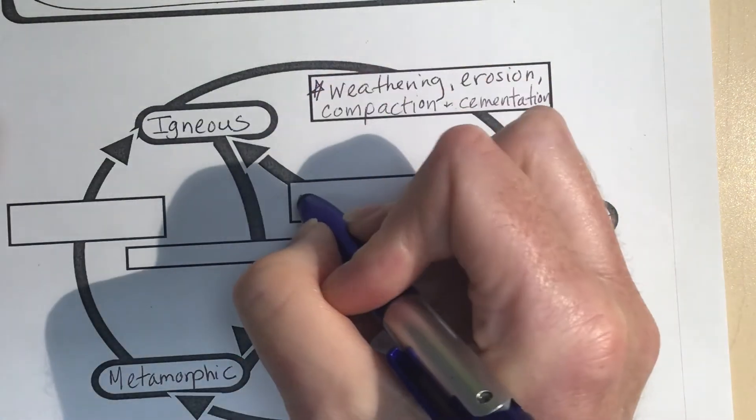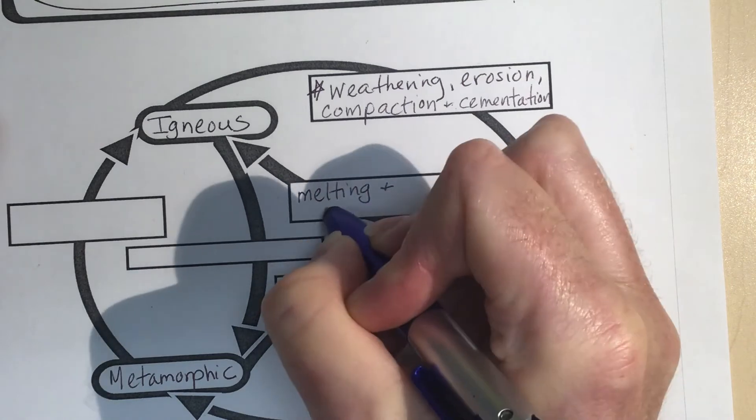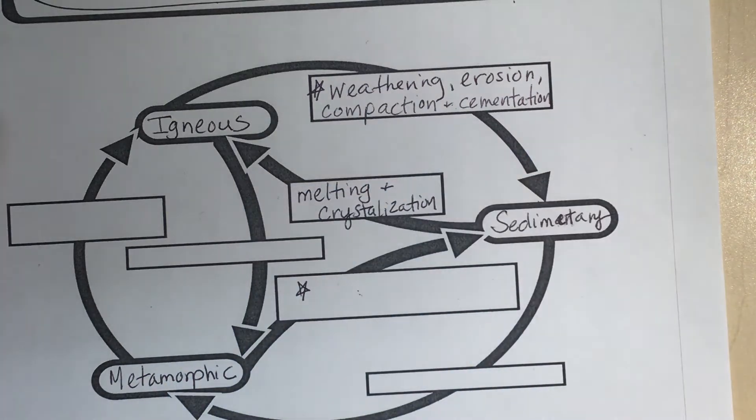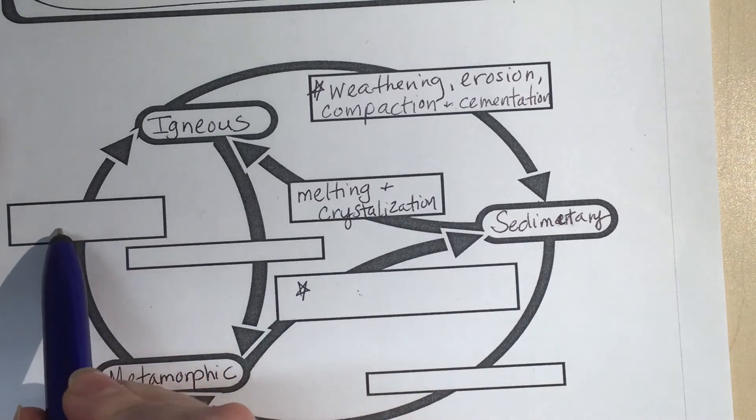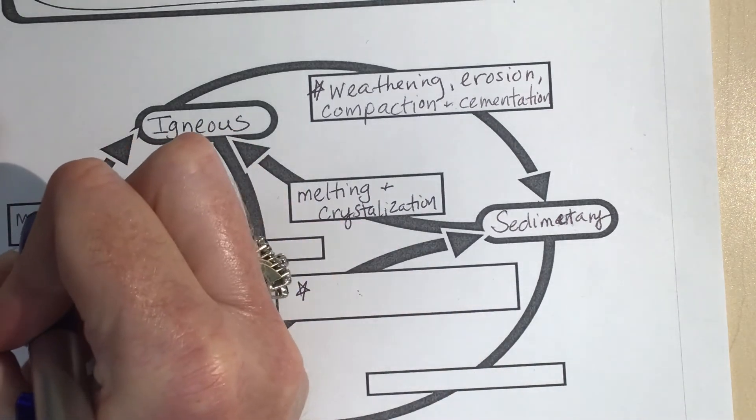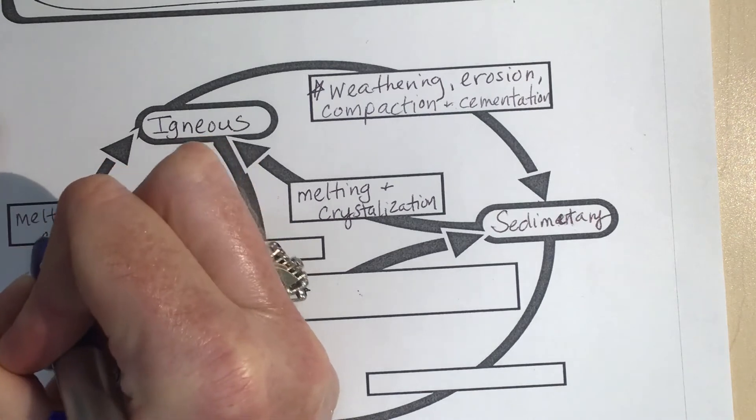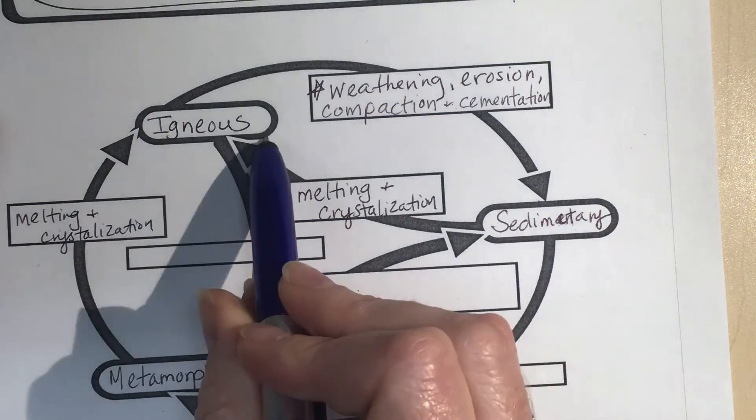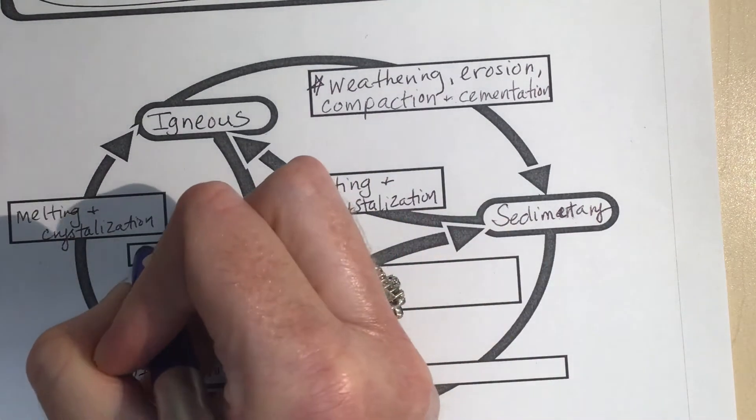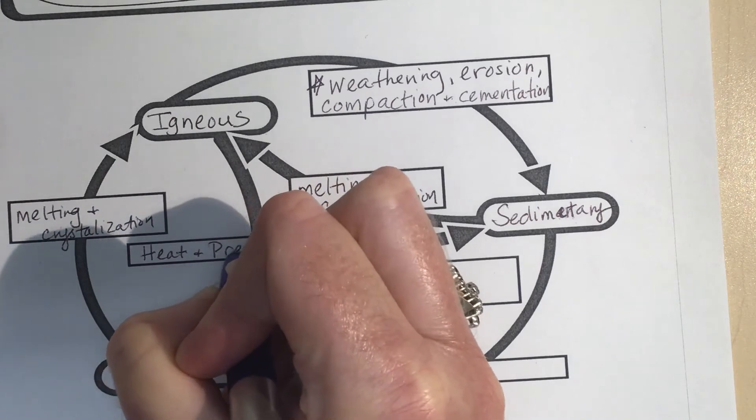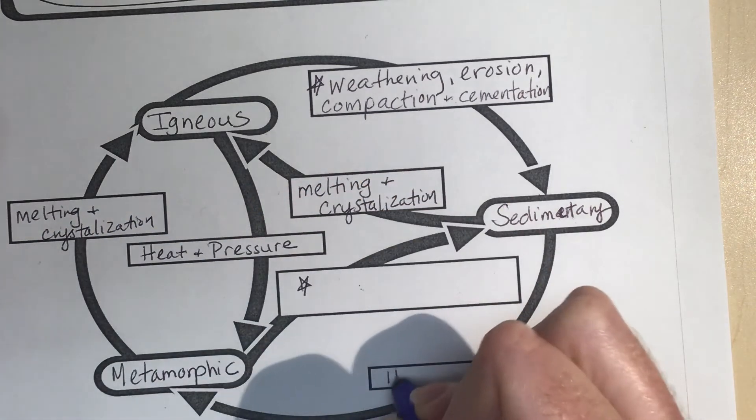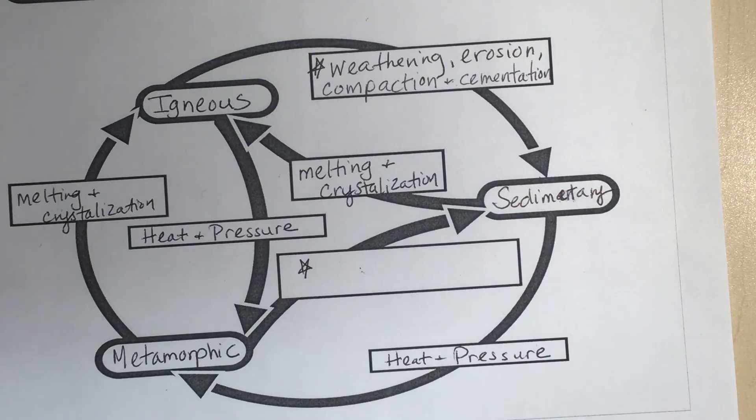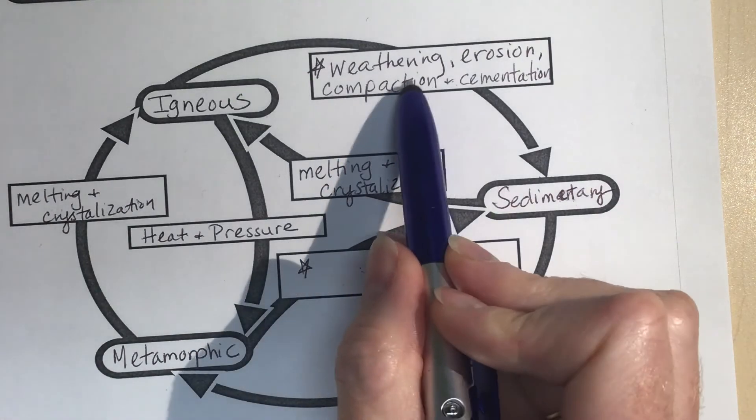Okay, sedimentary can turn into igneous through melting and cooling and crystallization. And that also occurs here, melting and crystallization. So metamorphic can turn into igneous through melting, sedimentary same thing. And then we have here heat and pressure turns things into igneous rock. So we have all of the paths here. If this bothers you that this is blank, you can go ahead and copy this into this.